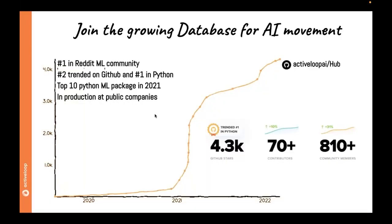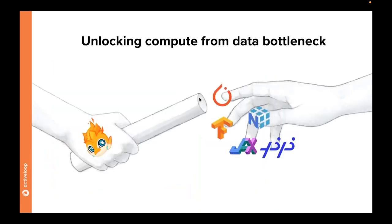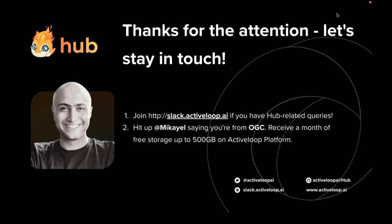As I mentioned, we are heavy on open source. Our tool was number two trending on GitHub last year and number one in Python languages, considered one of the top 10 ML packages. We've been featured multiple times in the Reddit ML community. Our Slack community is at slug.activeloop.ai — feel free to join. We're focused on solving the data bottleneck between remote storage and deep learning frameworks. Feel free to ask questions and we'll also give free storage up to 500 GB if you ping Mikael in our Slack channel.